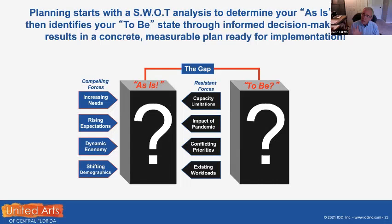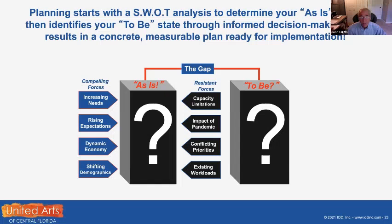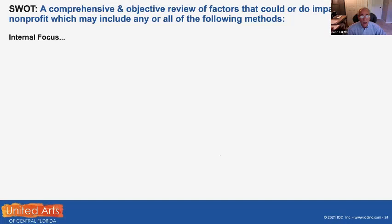You can structure the SWOT around: are we being driven by increased need, rising expectations, a dynamic economy, changing demographics? And what's in the way? We'd love to do this, but we don't have the capacity; we're working 18-hour days; conflicting priorities; existing workloads; or we're just now able to have live performances again. The as-is to to-be model is a key takeaway. The SWOT gives us an accurate picture — like going to the doctor, getting all the tests, and then figuring out: now, what do you want to be?